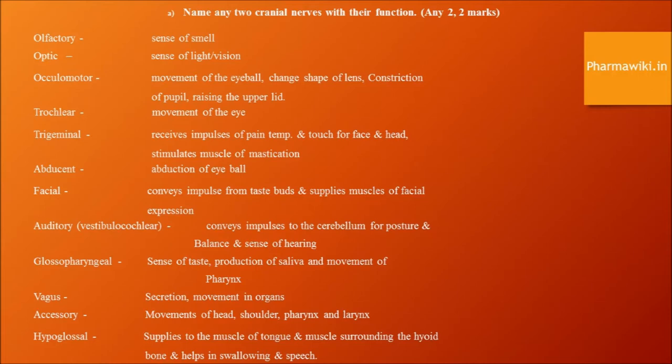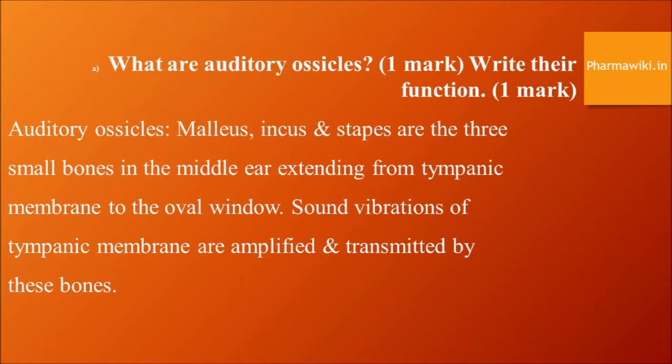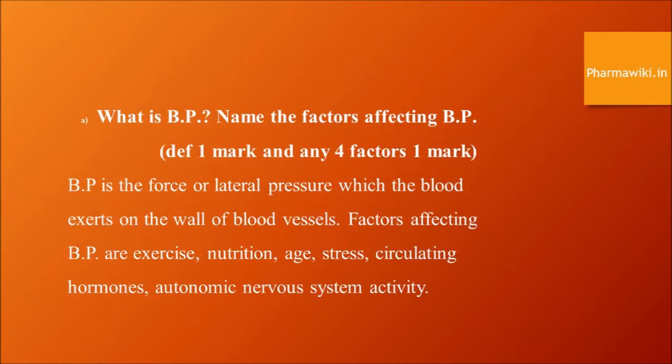What is blood pressure? Blood pressure is the force or lateral pressure which the blood exerts on the wall of blood vessels. Factors affecting blood pressure are exercise, nutrition, age, stress, circulating hormones, and autonomic nervous system activity.